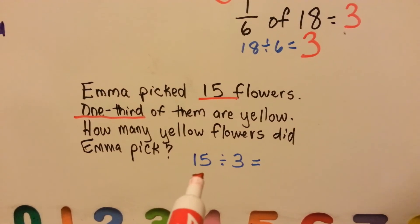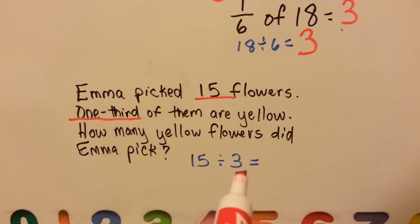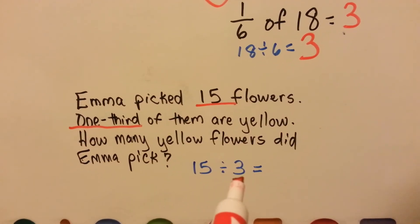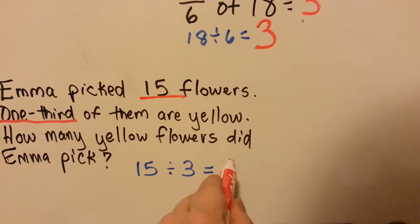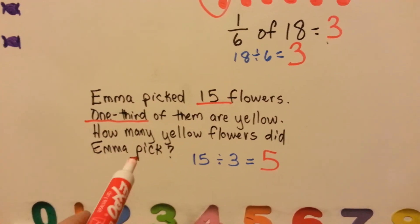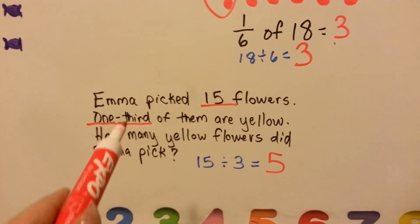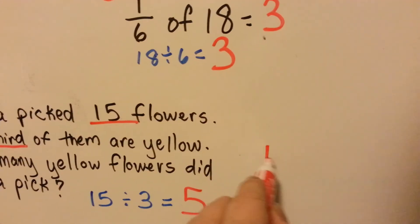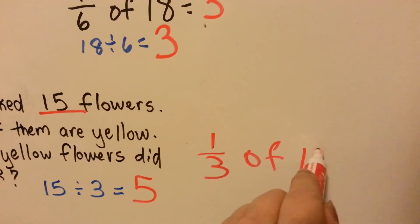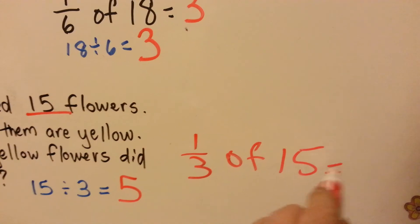So to solve this, we're going to say 15 divided by 3. 3 times what is 15? 3 times 5. So 5 of the flowers are yellow. 1 third of 15 is 5.